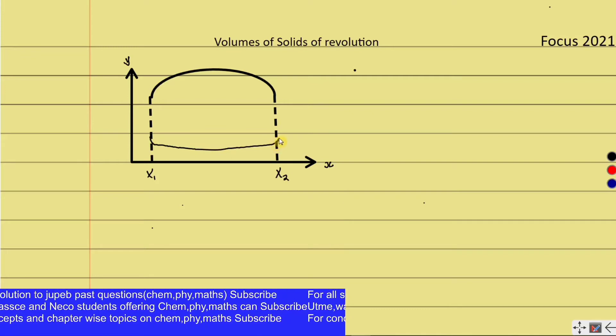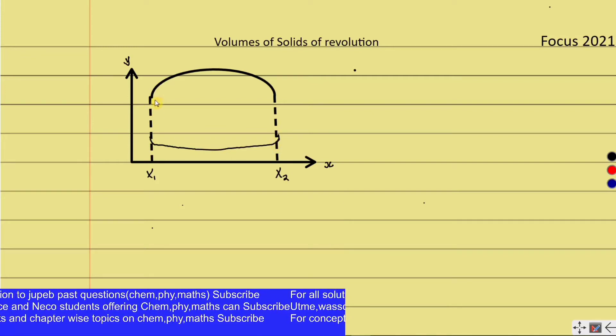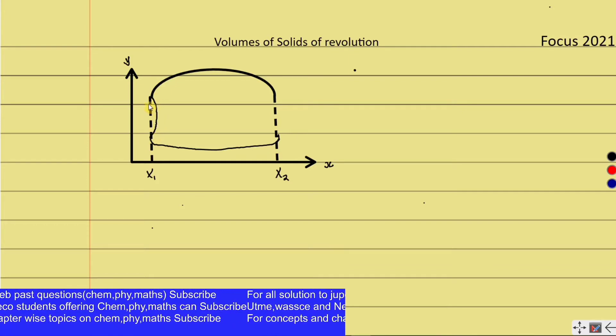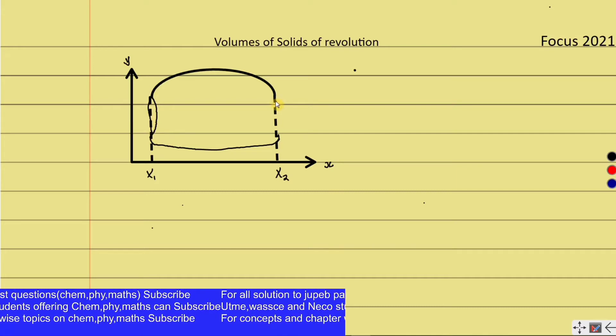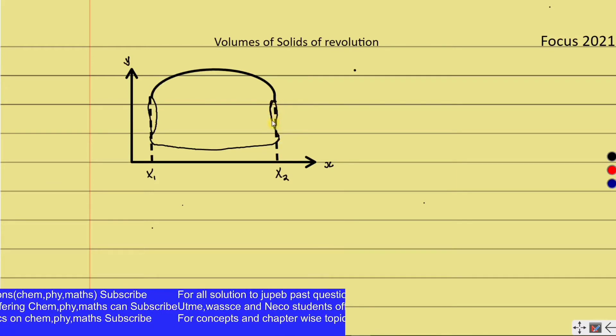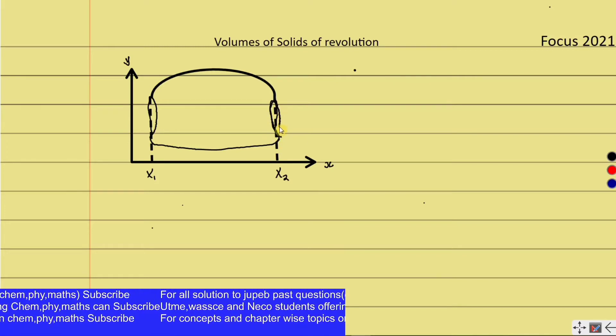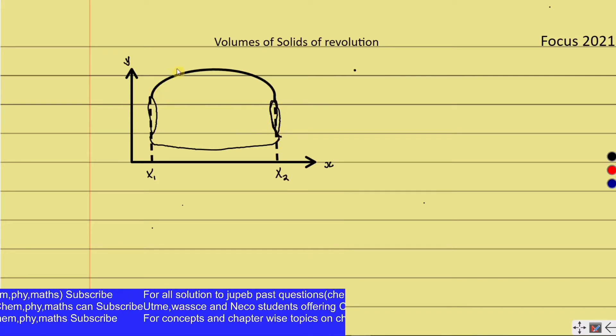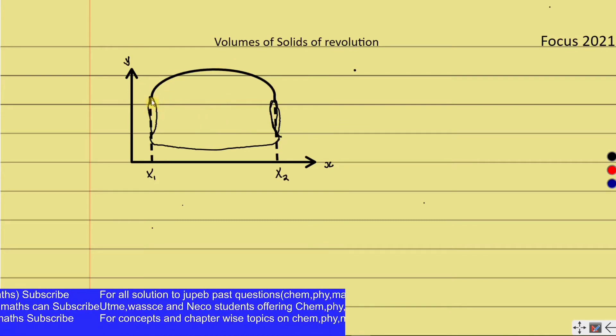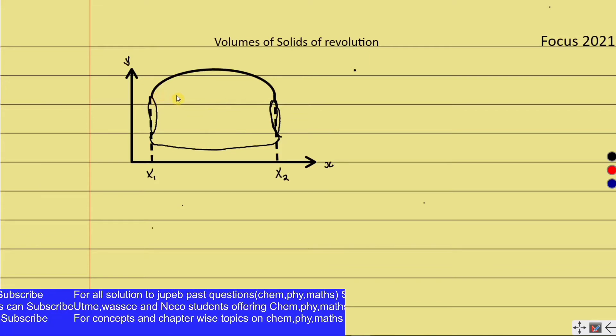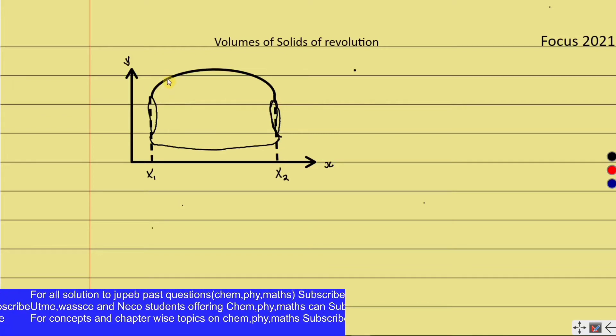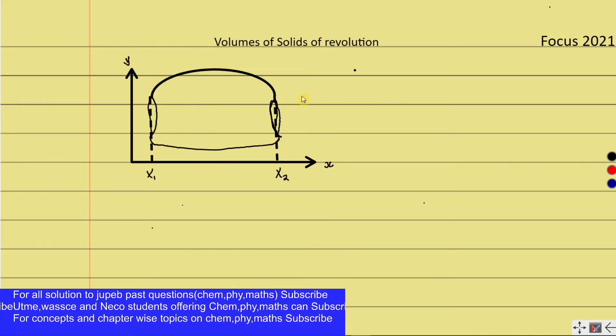As it is rotating, there will be a clockwise rotation forming something like this about its axis. When it rotates, it's forming a solid of revolution. The rotation gives us a kind of shape we cannot easily estimate, but from a knowledge of integration we can actually calculate the volumes of this revolution.